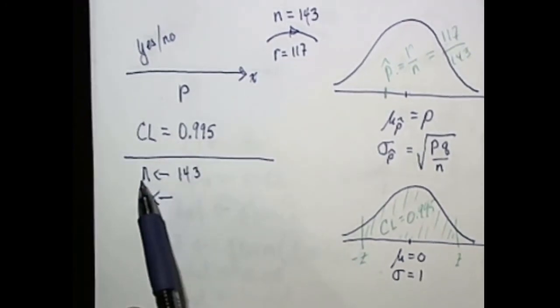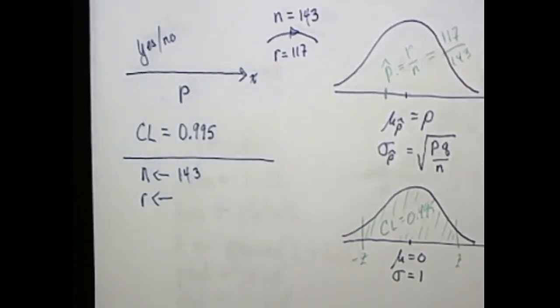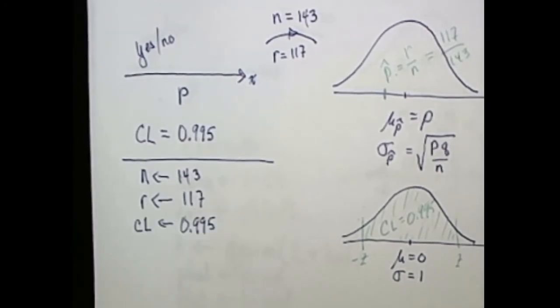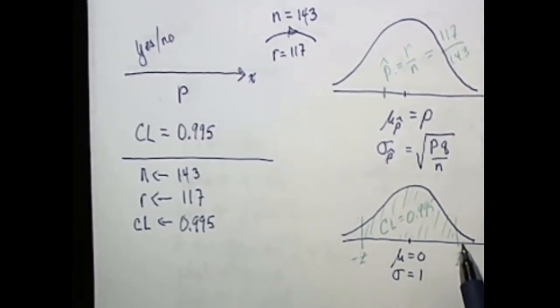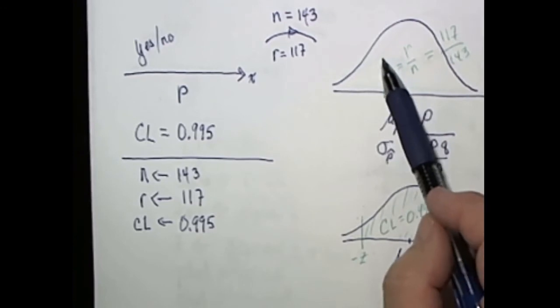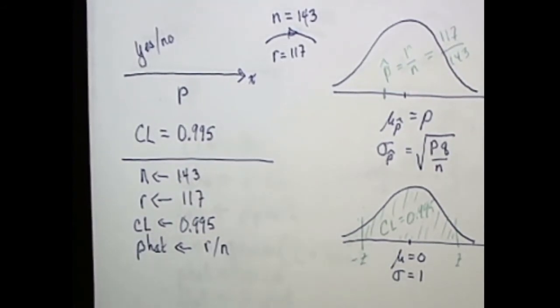Let's begin with the given information. We know that our sample size was 143. Our number of successes is 117. The other piece of given information is the confidence level, which is 99.5%. So there's the given information. Let's begin to calculate the things that we need to know. One of the things that we need to know is what this z is. We also need to know what p hat is. So let's ask R to calculate each of those. p hat will be r divided by n.